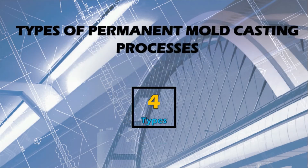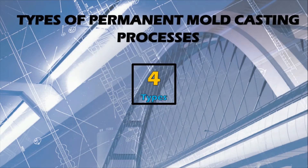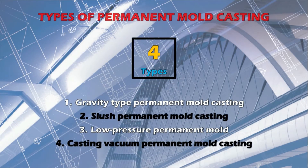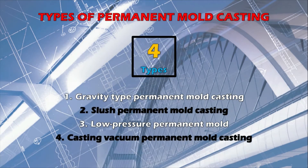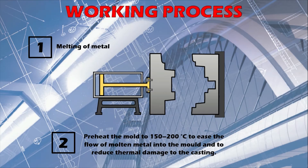There are four main types of permanent mold casting: the gravity process, slush permanent mold casting, low pressure permanent mold casting, and vacuum permanent mold casting.